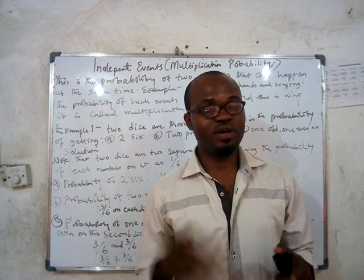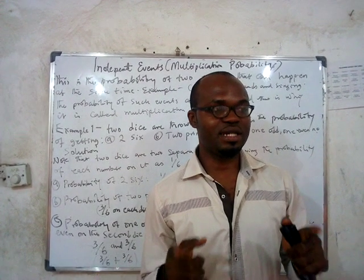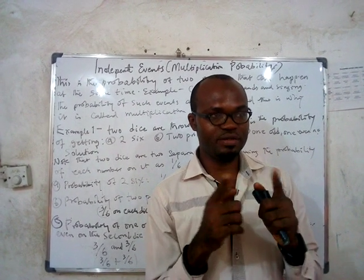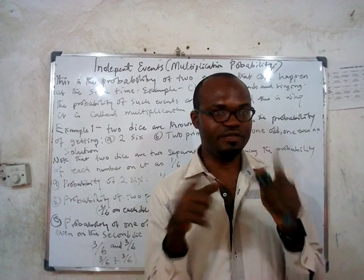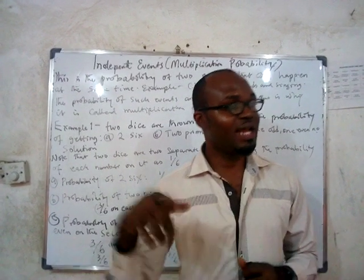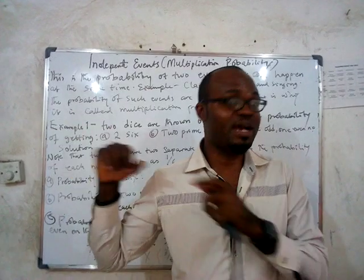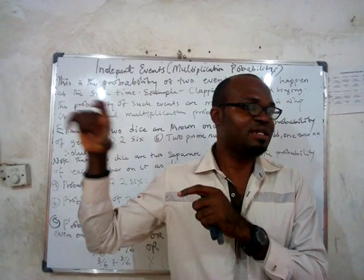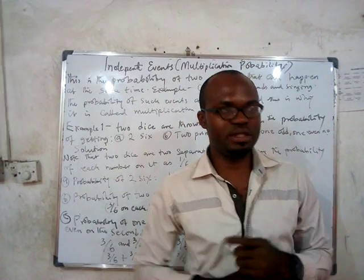The probability of having two events that can happen at the same time is found by multiplying the individual probabilities together. Unlike mutually exclusive events, where you have to add the individual probabilities together.